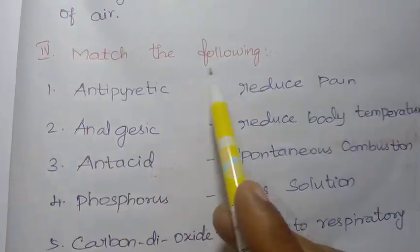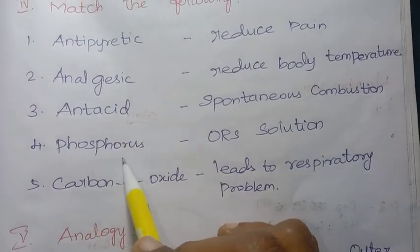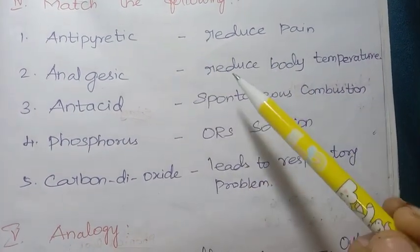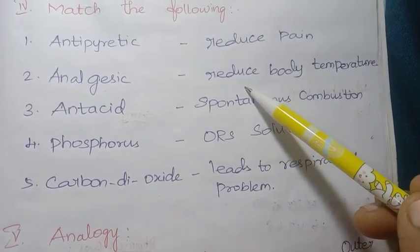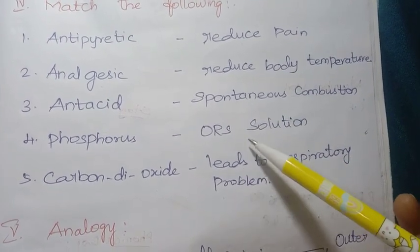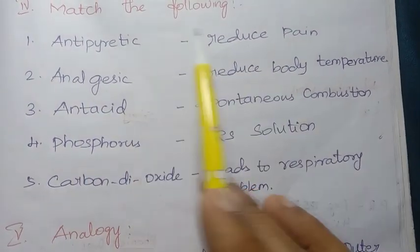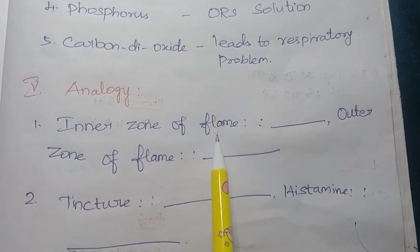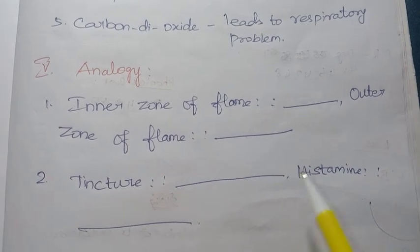Roman numeral four: match the following. Antipyretic - reduce pain. Analgesic - reduce body temperature. Antacid - spontaneous combustion. Phosphorus - ORS solution. Carbon dioxide - leads to respiratory problem. Find the correct matches. Then there's an analogy: inner zone of flame to outer zone of flame, and tincture to histamine.